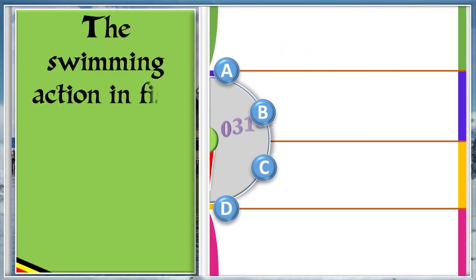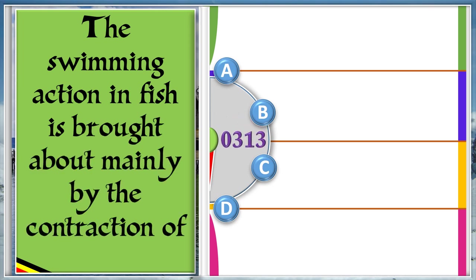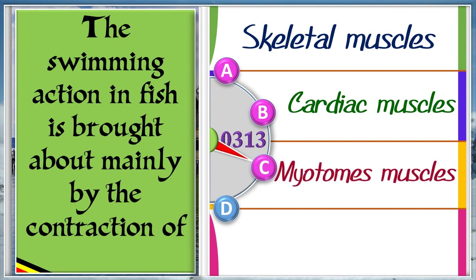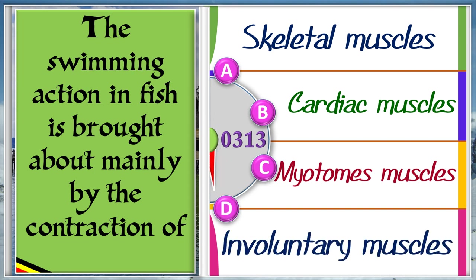The swimming action in fish is brought about mainly by the contraction of A: Skeletal muscles. B: Cardiac muscles. C: Myotome muscles. D: Involuntary muscles. The answer is C, myotome muscles.